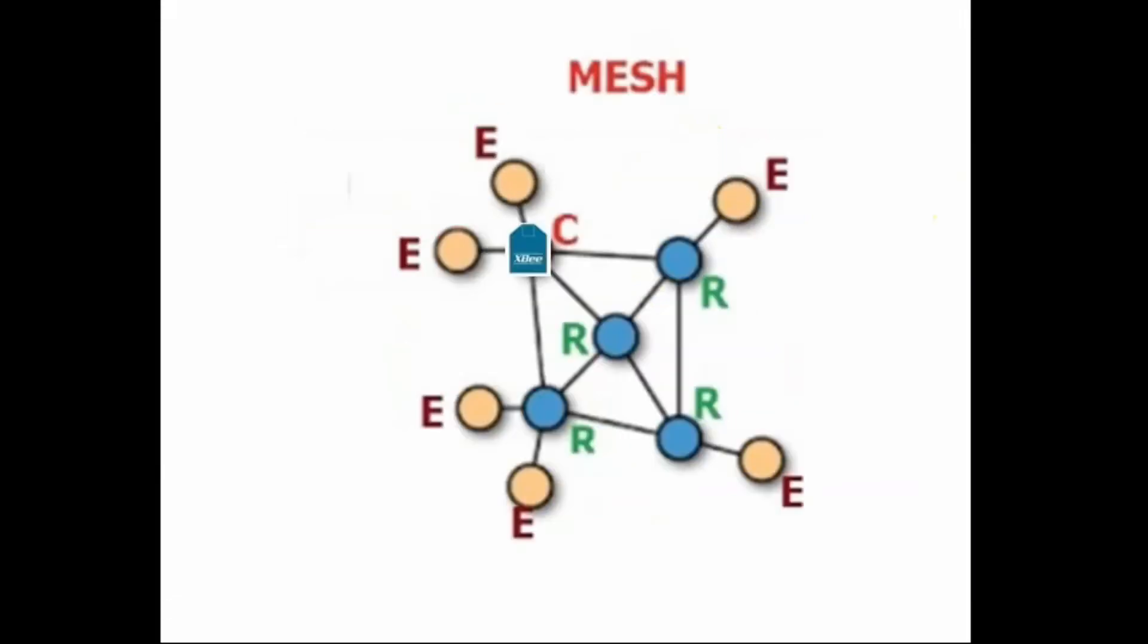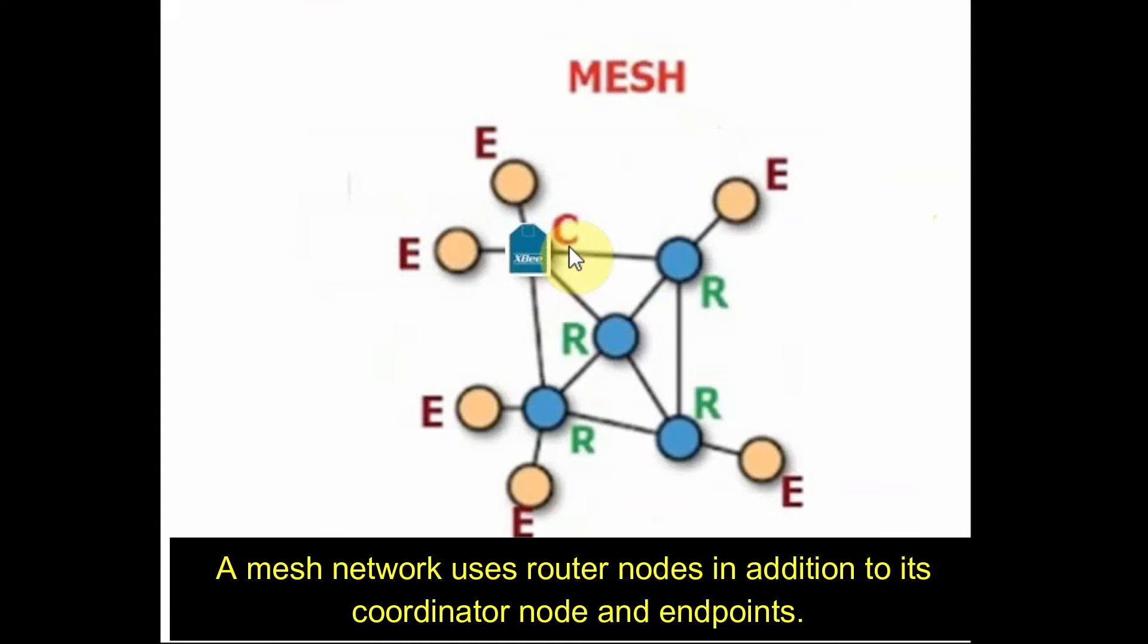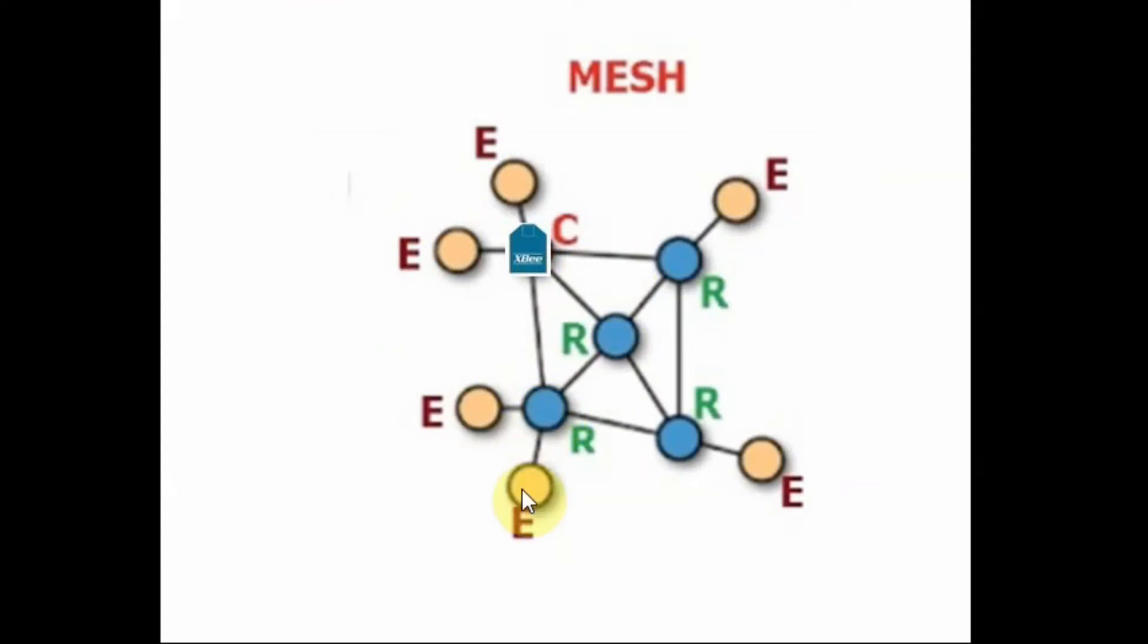And the next one is the mesh network topology which uses router nodes in addition to its coordinator node and endpoints. These router nodes can pass messages to other routers as well as to the child endpoints.